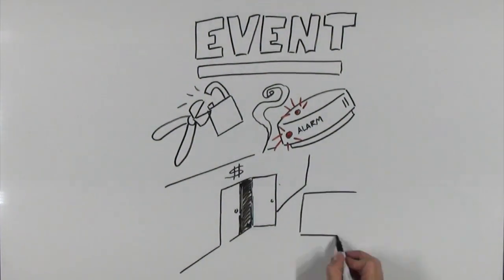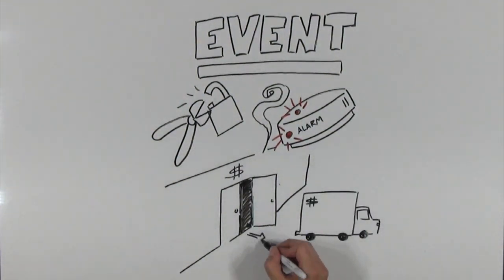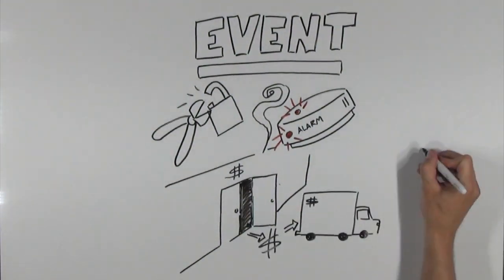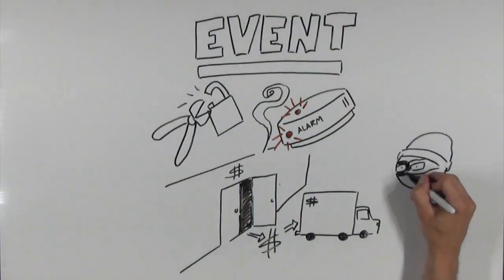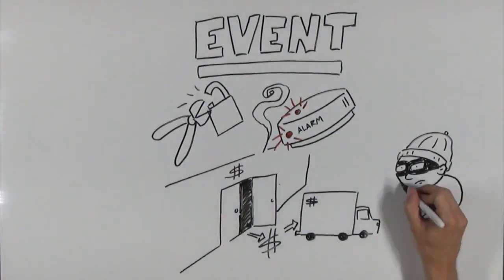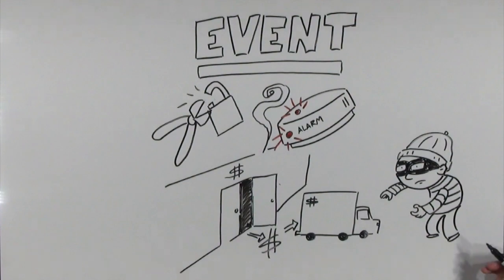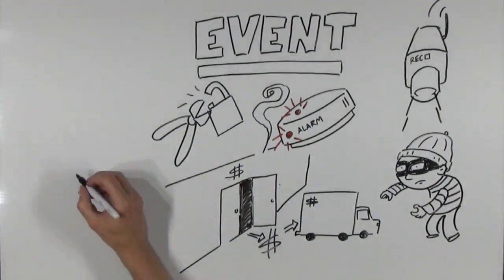This type of video monitoring can also be known as video verification and is the most effective way to monitor video. When used with a commercial intrusion alarm system, for example, this can help determine the validity of the alarm, reducing false dispatches of the police.